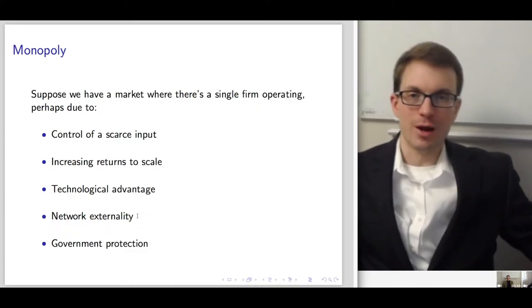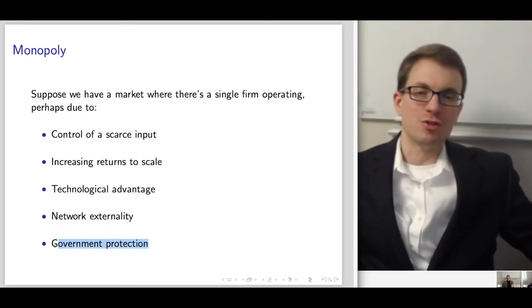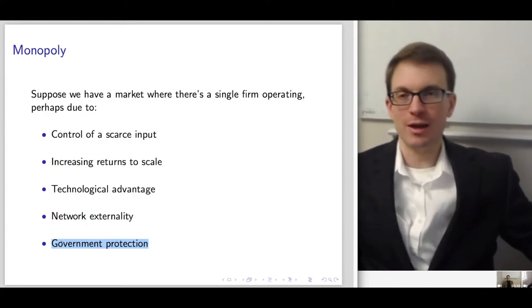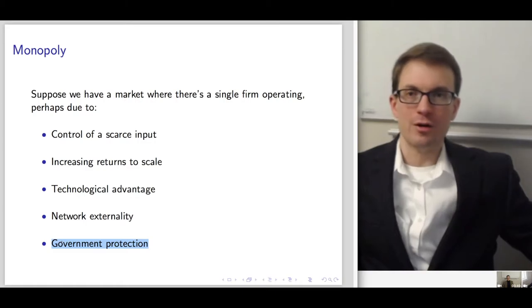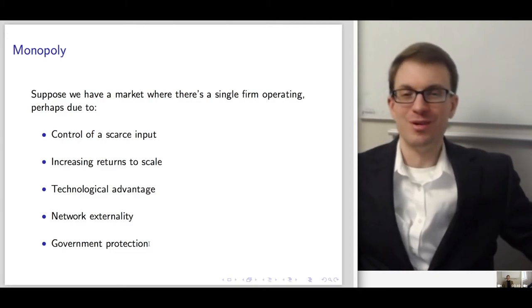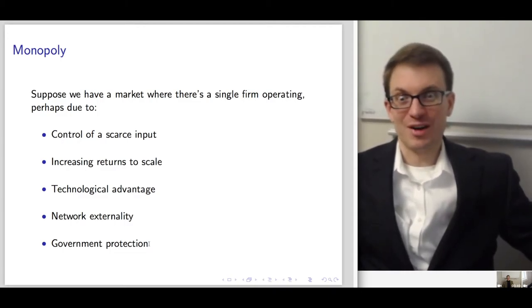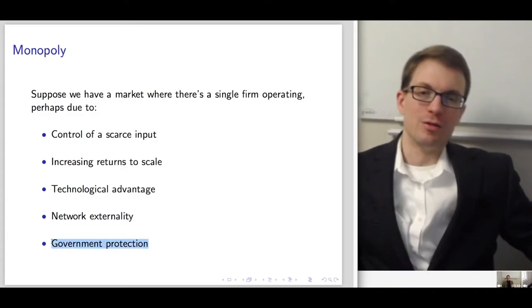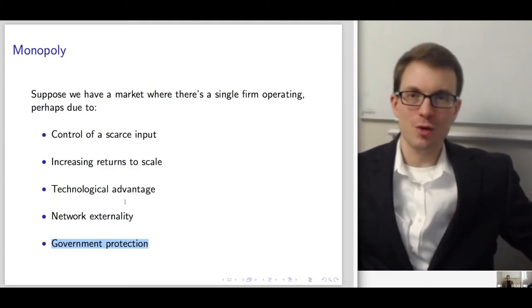Network externality can confer monopoly power, and then there's government protection. Big examples would be utilities — water, power, electricity, gas. Government protection can also lead to monopolies through patents and copyrights: if works are copyrighted, you're the only one that can benefit from your work. Government protection can definitely lead to a situation where we have a monopoly.